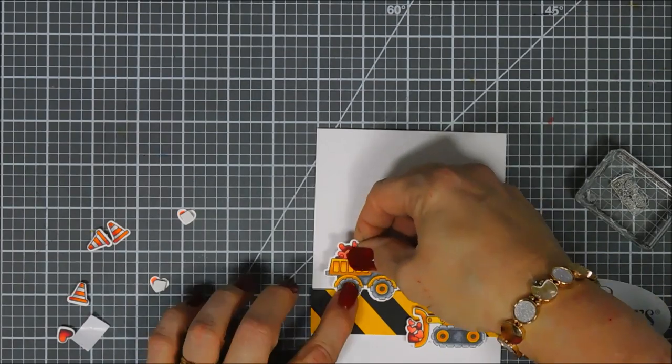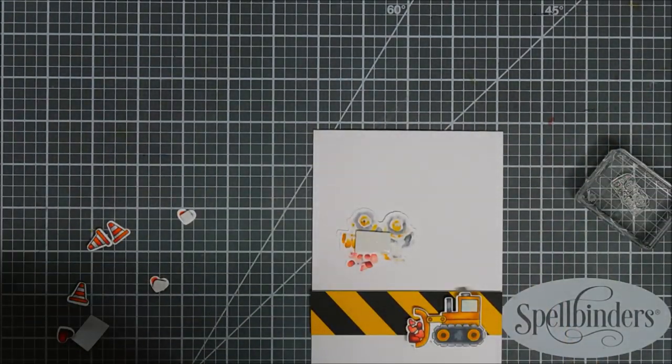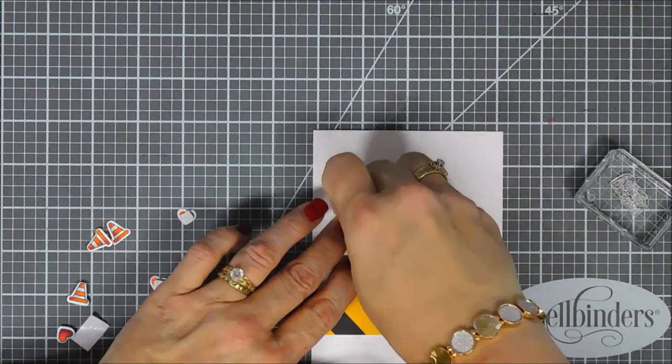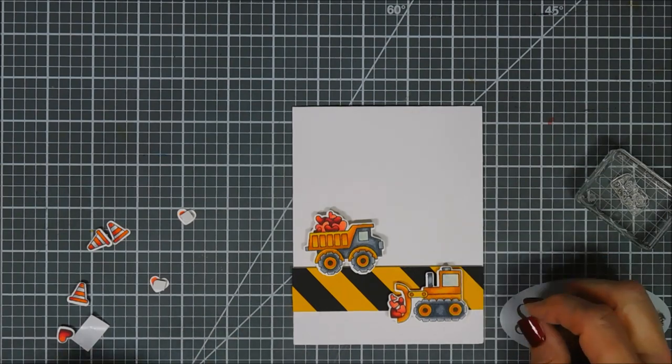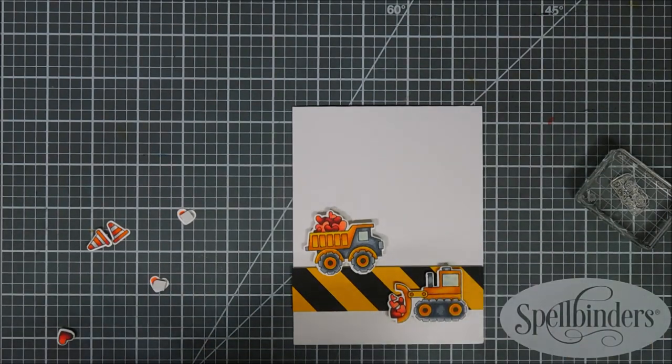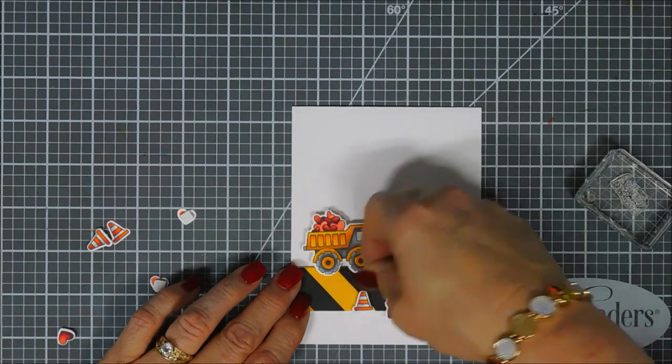This truck we need to add an extra piece of foam adhesive just so everything lines up nice and even. We'll add one safety cone in front of our bottom truck and then we'll add one to our top right in front of it.